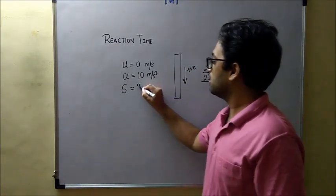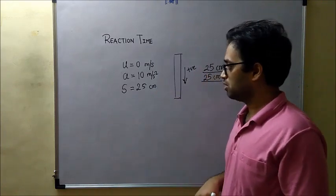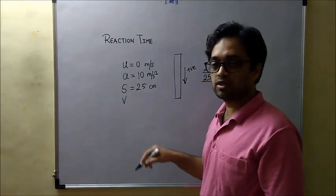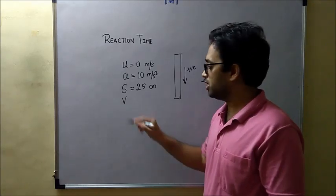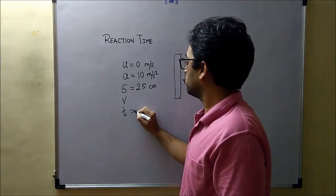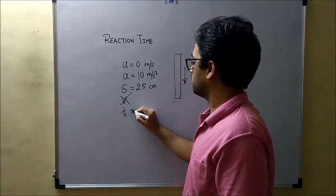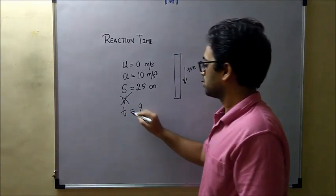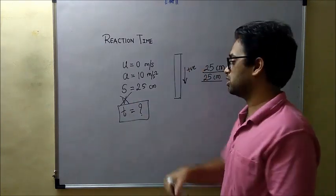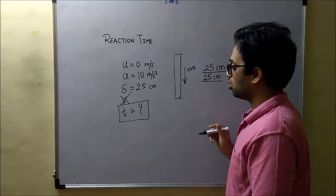Now the displacement that happened between I releasing the scale and she catching it. The distance that it traveled is average distance is 25 centimeters, S = 25 cm. Now the two remaining things are final velocity of the scale before she caught it and the time that it took. Now we are not interested in the velocity but we are interested in time and this is going to be her reaction time not my reaction time. This is going to be her reaction time because she noticed it and she caught it.